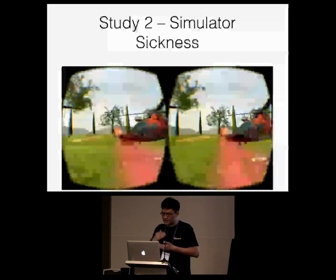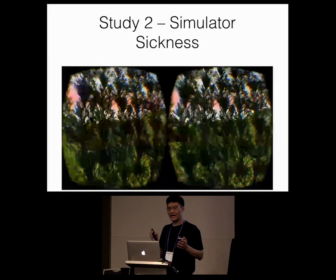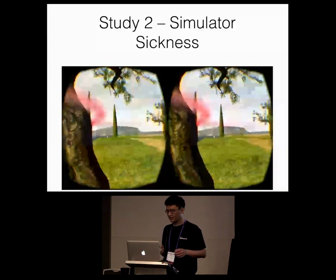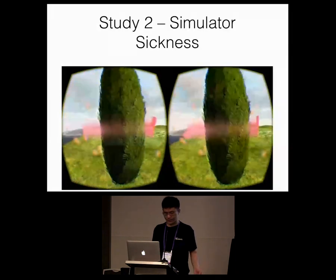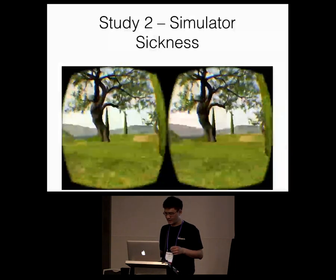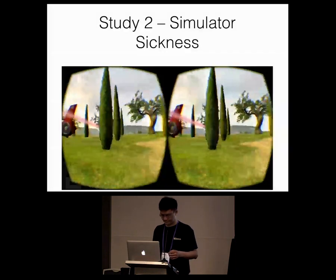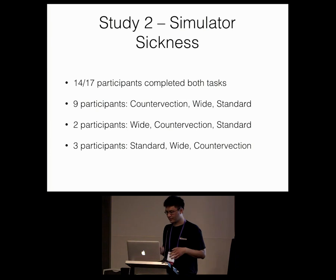In our second study, we measured the sparse periphery's effect on simulated sickness. Users chased an orb moving through a forest scene using a gamepad, comparing three conditions: VR alone, VR with the periphery rendering normal content, and VR with the countervection visualization. Users performed the first task three times in random order, then in a second task were free to move and switch between conditions until they could force-rank them by comfort. Of 14 participants, nine ranked countervection first, two ranked the ordinary periphery first, and three chose the standard no-periphery condition — demonstrating that participants generally preferred sparse periphery conditions and most preferred countervection mode.